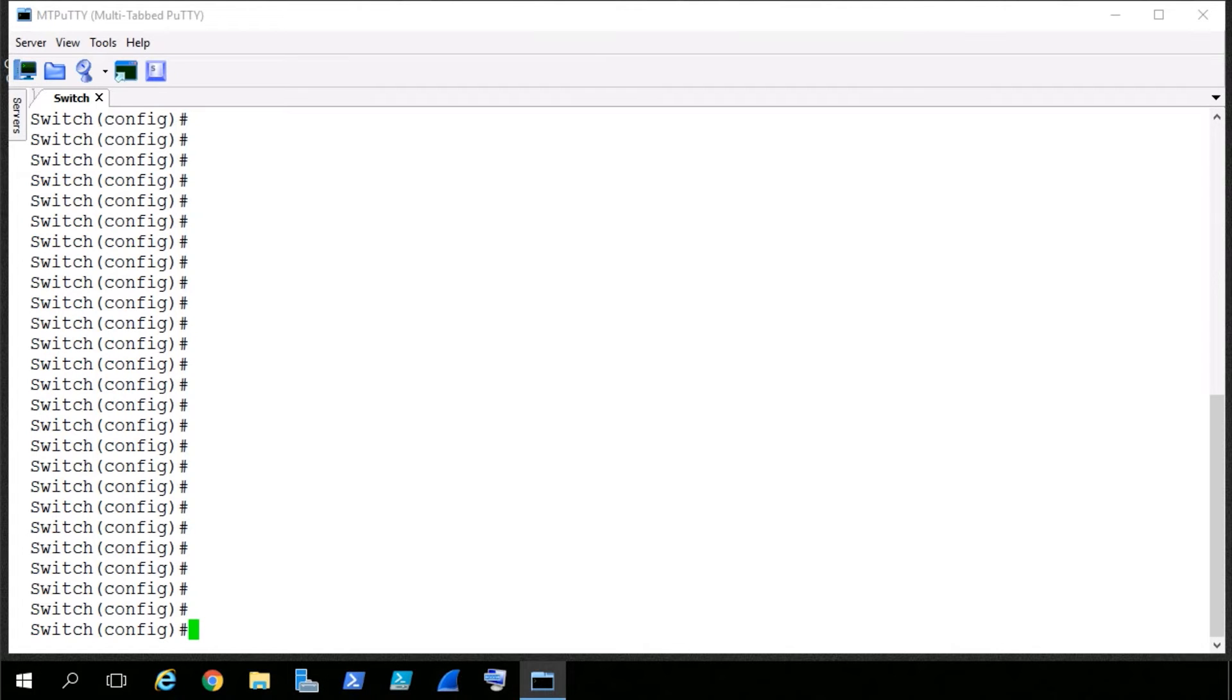And that's how we give this switch an IP address that it can use so we can connect to it to manage it. So to do that, we're going to go into interface VLAN1.